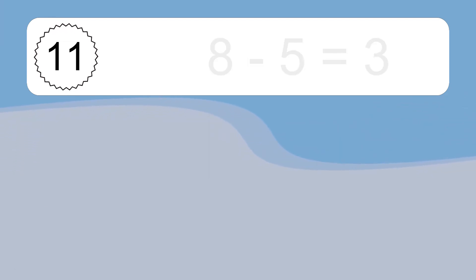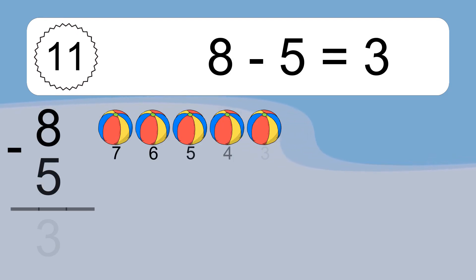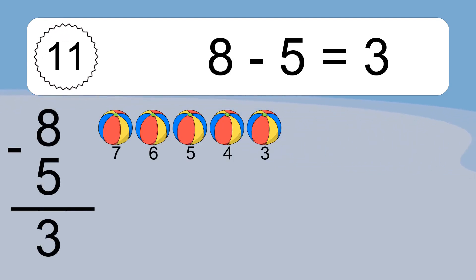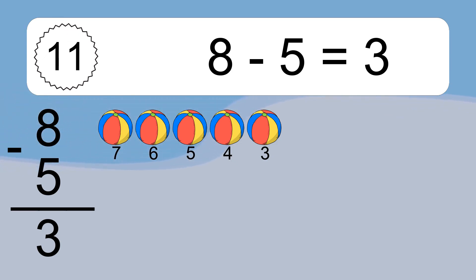8 minus 5 equals what? 8 minus 5 equals 3. Let's count it: 7, 6, 5, 4, 3.